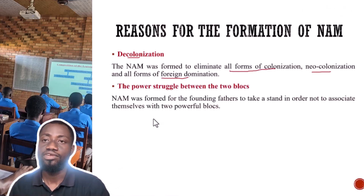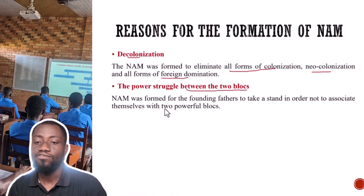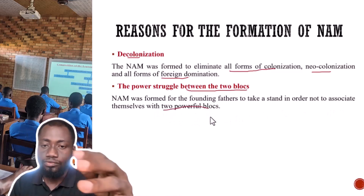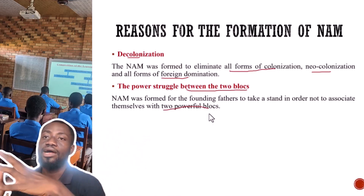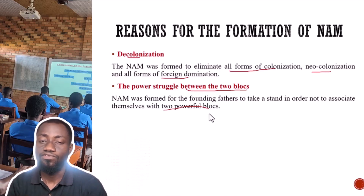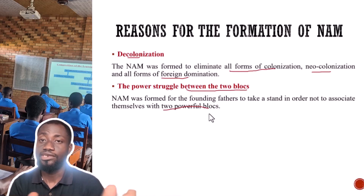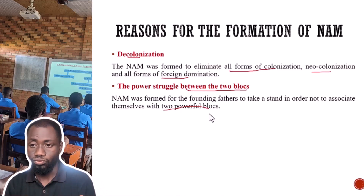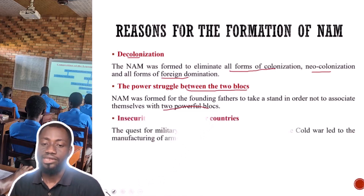The next reason for the formation of the NAM was the power struggle between the two blocs. NAM was formed for the founding fathers to take a stand in order not to associate themselves with the two powerful blocs. Because of the Cold War, the Western and Eastern countries were fighting for influence, so the NAM was formed in response to that power struggle — just to take a decision not to align with any of them.